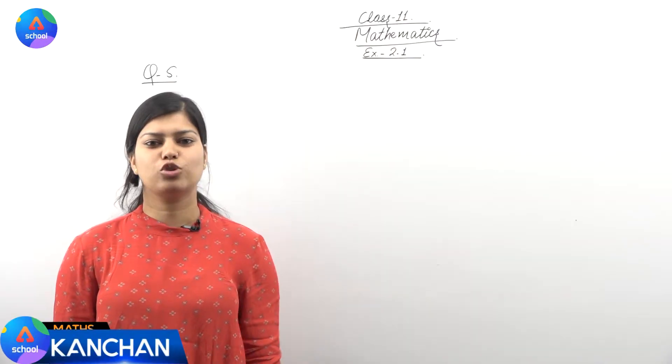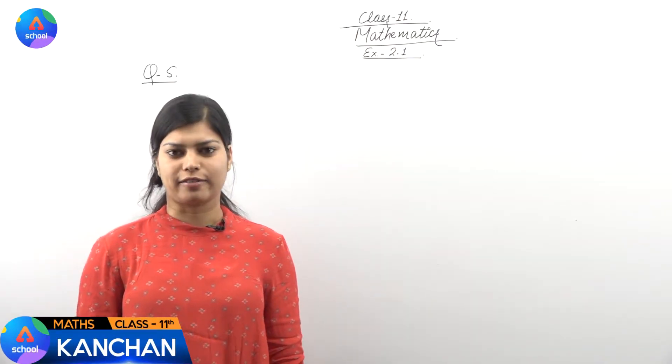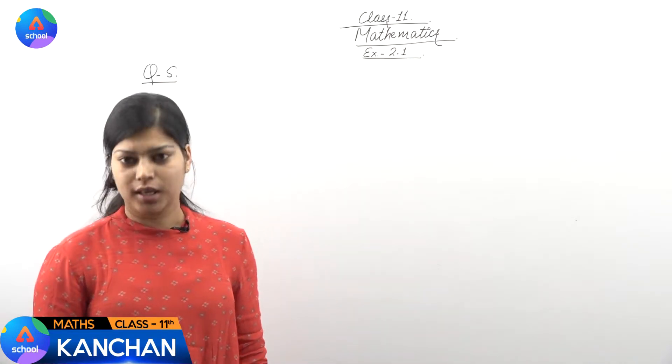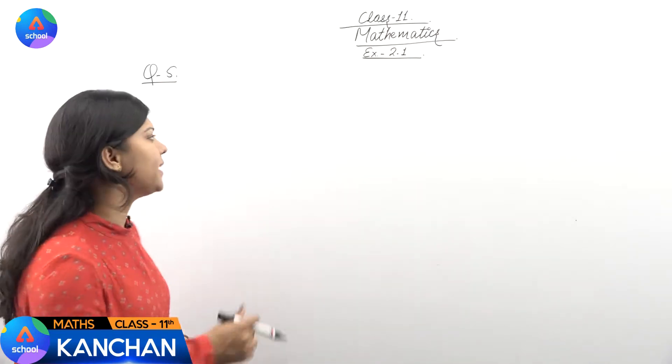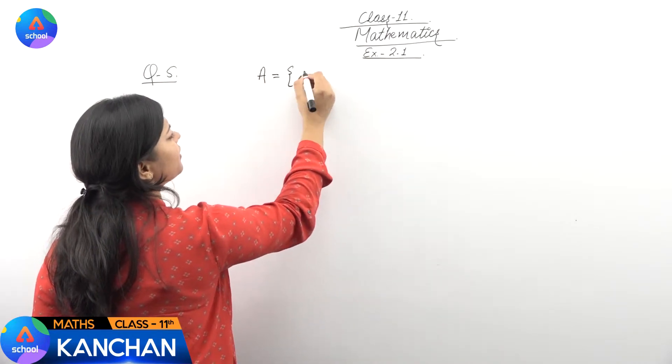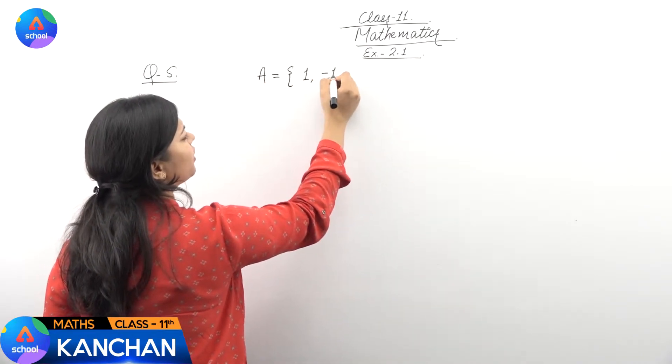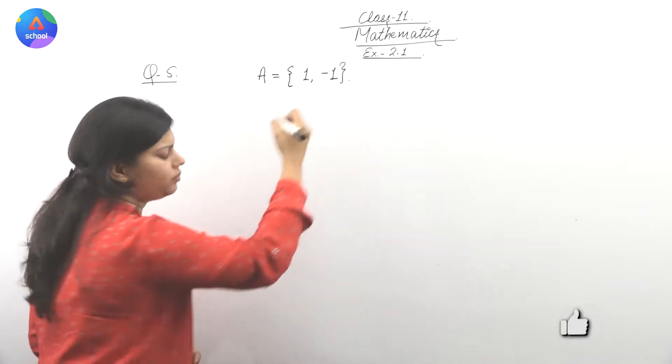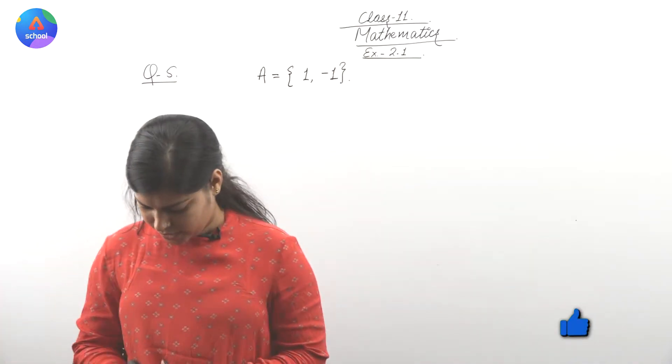We are doing exercise 2.1 and question number 5. Question 5 mein, hamain ek set given hai, that is set A, aur jis mein humain 2 elements given hai, 1 and minus 1.